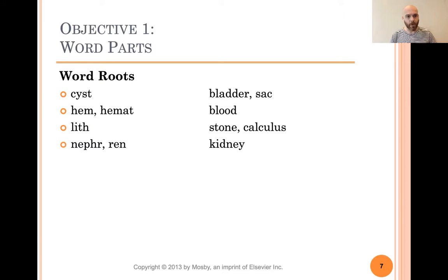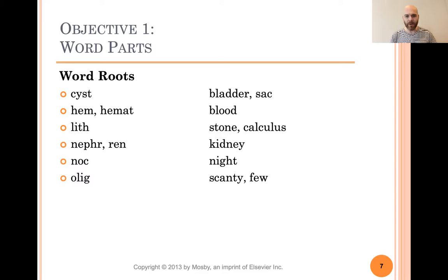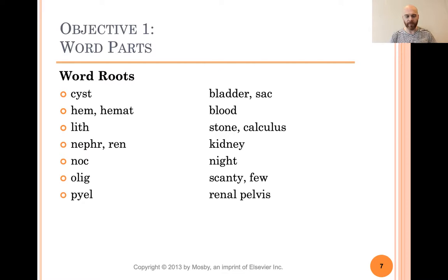Nephr or ren — they both mean kidney. So you might have heard me say renal pelvis earlier; renal refers to the kidney. Noct means night — we'll make a word for that later. Olig means scanty, or few, or just a little bit. Pyel means renal pelvis — don't look at the P-Y and think it means pus from our last lesson. This pyel is all one word part together and it means the renal pelvis.